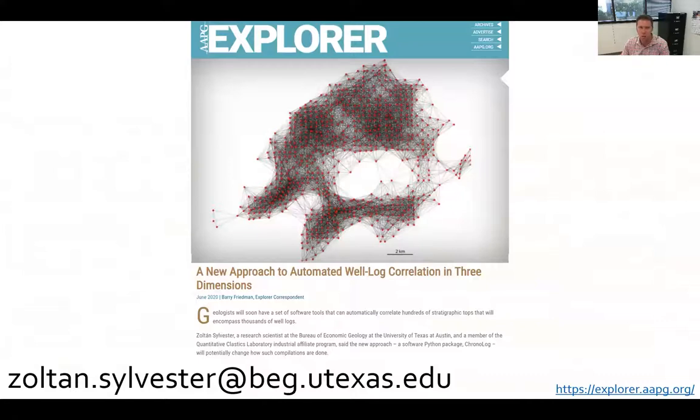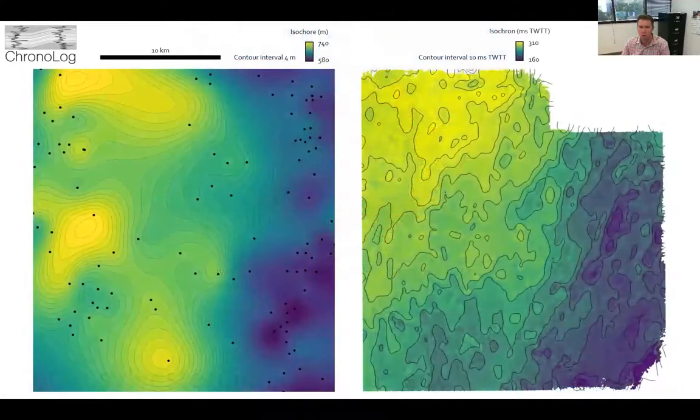If you'd like to learn more about this technology, please see our recent article in APG Explorer, or you can contact the person who developed the technology. He's a co-PI of our lab. His name is Zoltan Sylvester. His email address is provided below. Again, we really can't imagine correlating hundreds of thousands of wells without this in places like the Permian Basin.